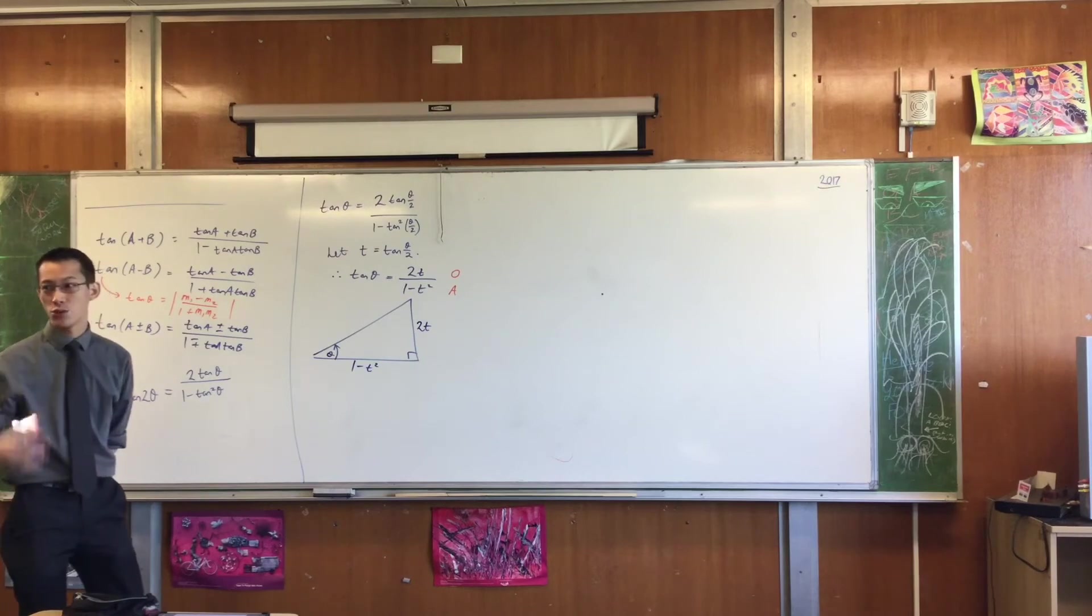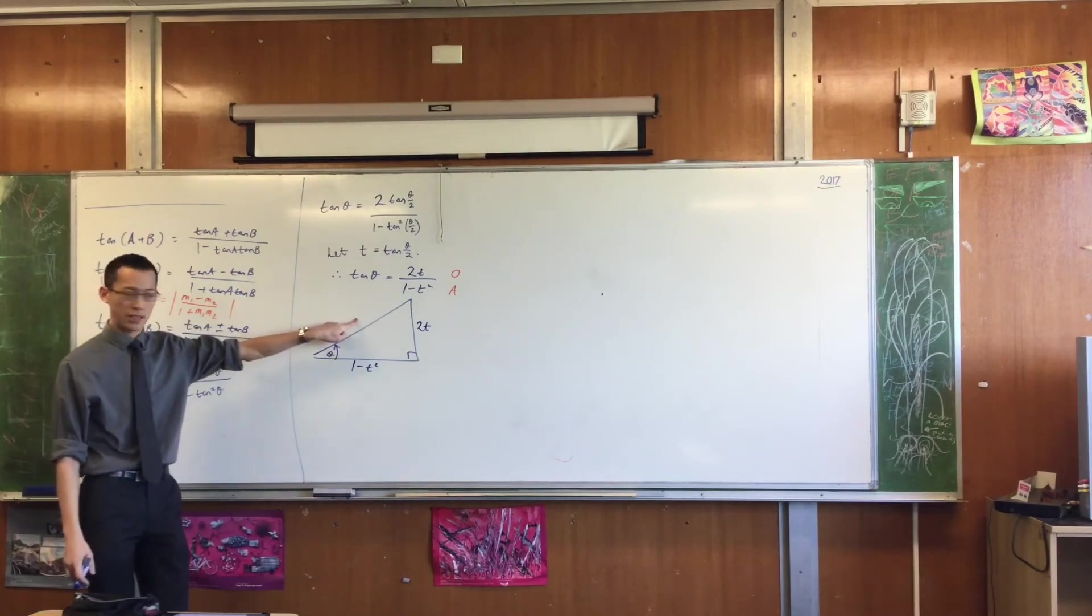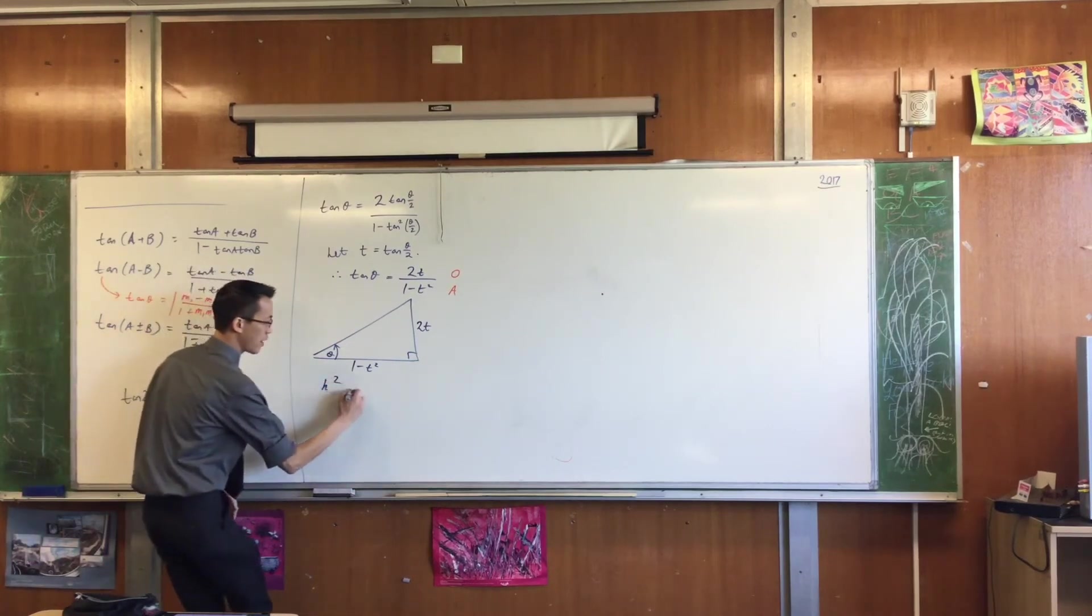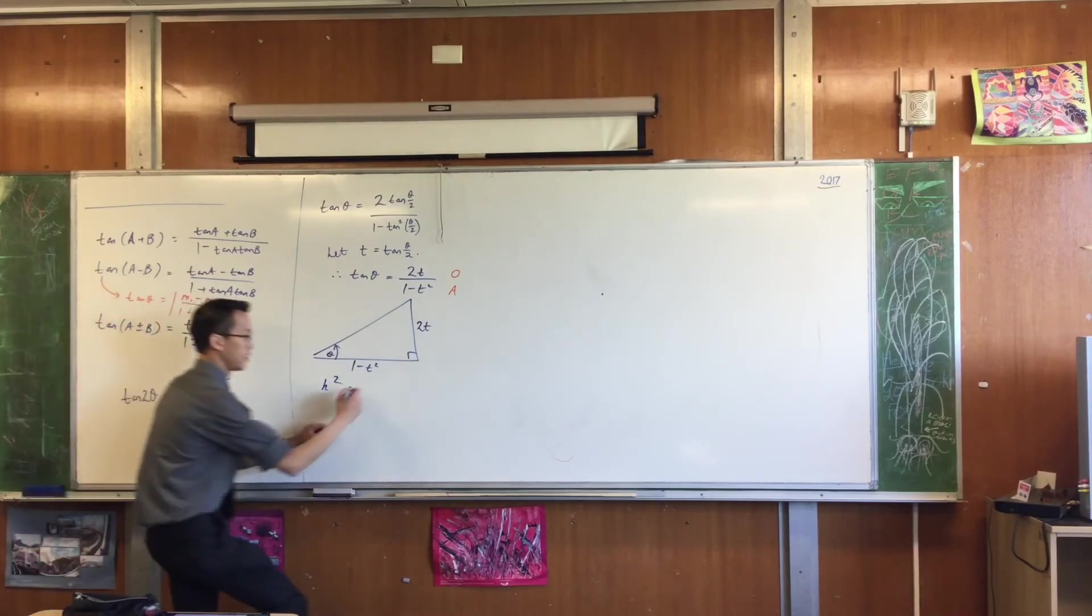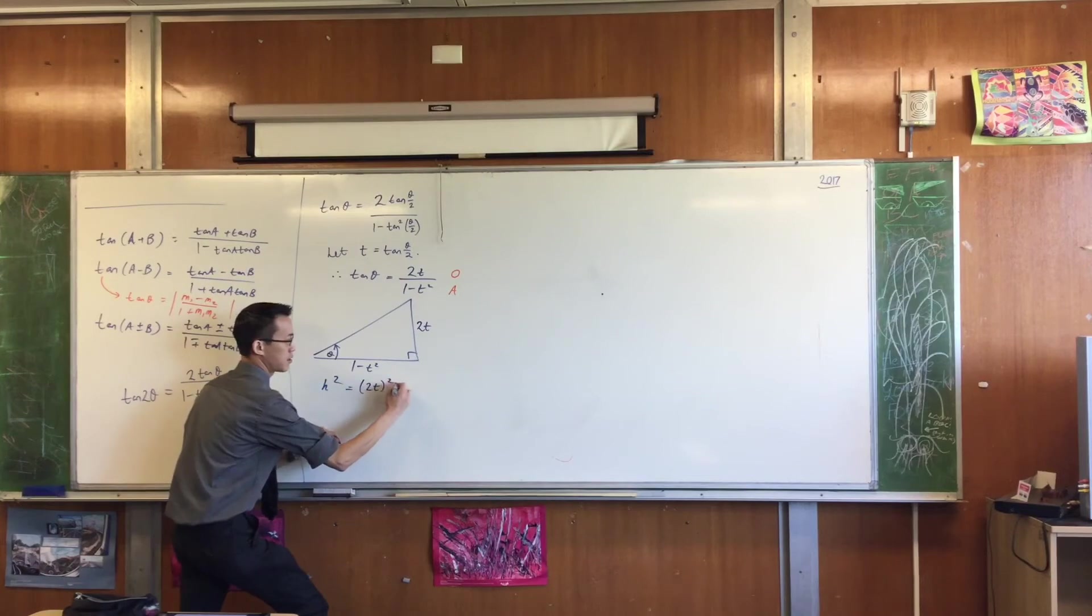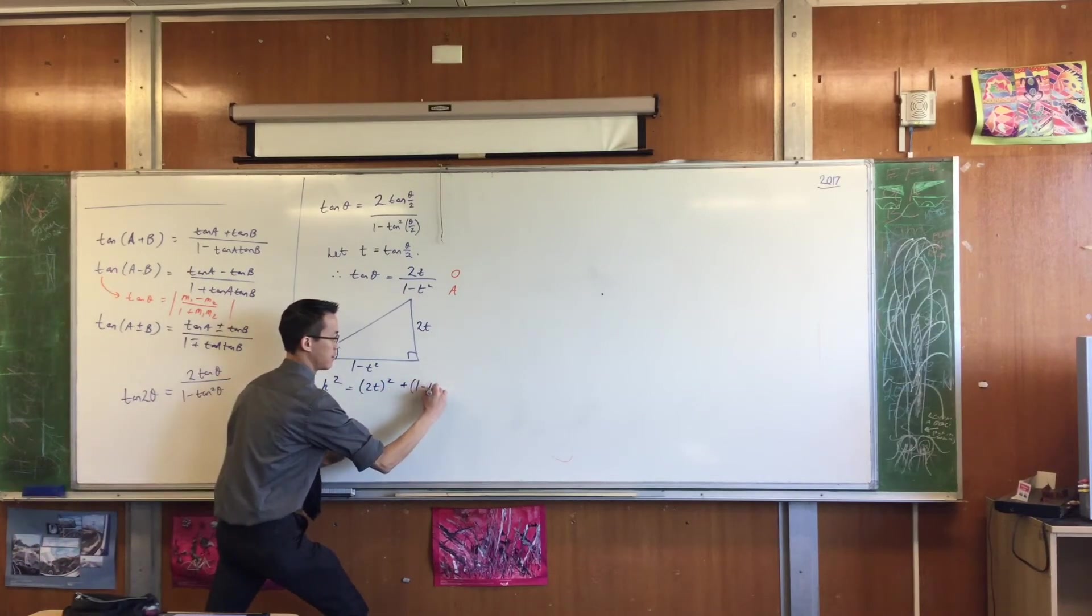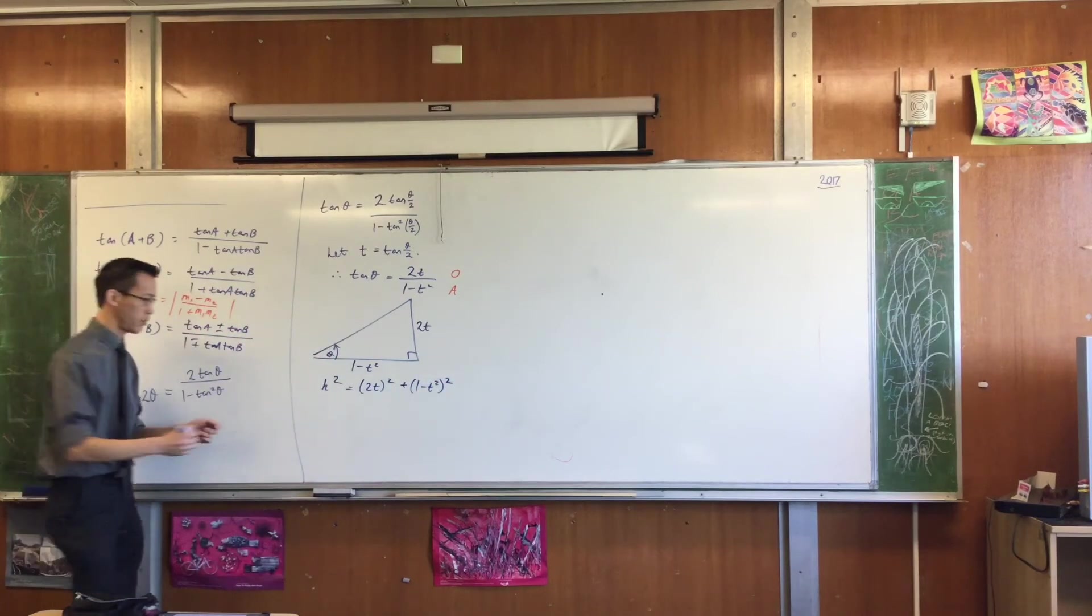That's a right angle triangle, so therefore, I could use Pythagoras to work out what the missing side is. Let's just call it, it's the hypotenuse, so let's just call it H for now. H² is going to be equal to what? Let's work with this a little bit.